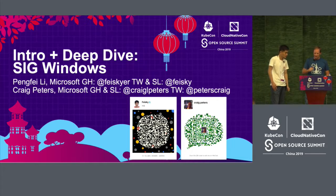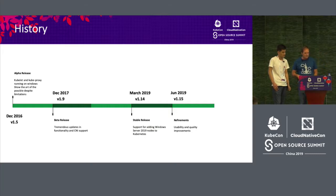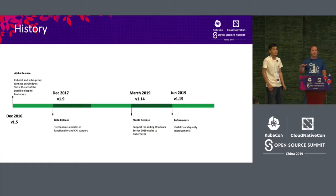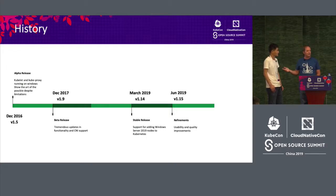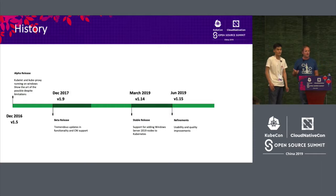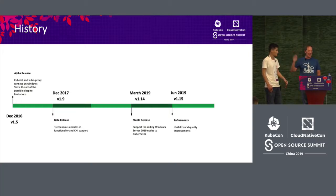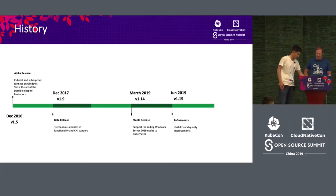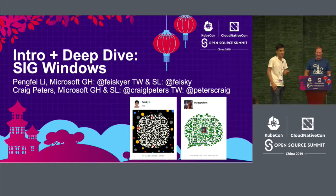We're going to start by talking about how we got to where we are today. Hopefully you have our contact information, so feel free to reach out. We'll give the talk in English but upload the Chinese version of the slides this afternoon. Feel free to reach out via Slack, Skype, email, or WeChat — we'll show our WeChat QR code so you can scan and join us. I apologize that I won't be able to respond in Chinese.